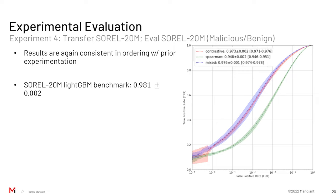However, when we fine-tune directly on SOREL — and I stress we are using an embedding representation that was trained on EMBER — we come within very close striking distance of the SOREL-20M LightGBM benchmark. We see again consistent performance orderings with respect to the loss type. This is a fairly impressive result: we achieve roughly the same performance with a 32-dimensional embedding trained on a different dataset.